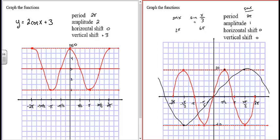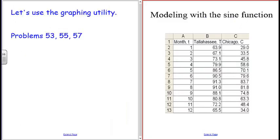For y = sin(x/3): the amplitude is 1 (coefficient in front of sine is 1). The coefficient of x is 1/3, so the period is 2π/(1/3) = 6π. There's no horizontal or vertical shift. So instead of going from 0 to 2π, we go from 0 to 6π. This is a horizontal stretch — one oscillation takes 6π rather than 2π.